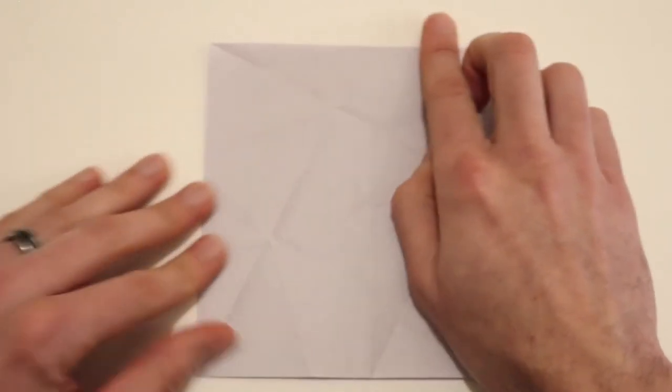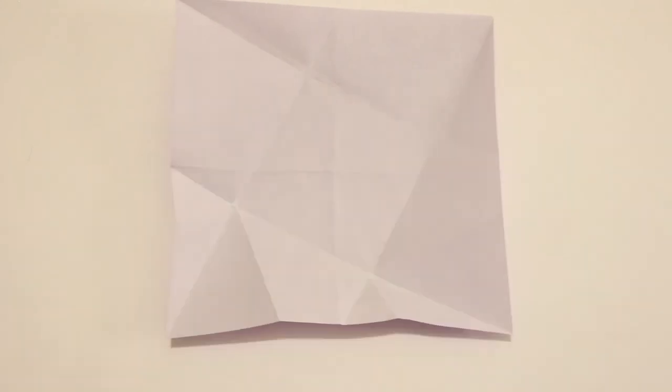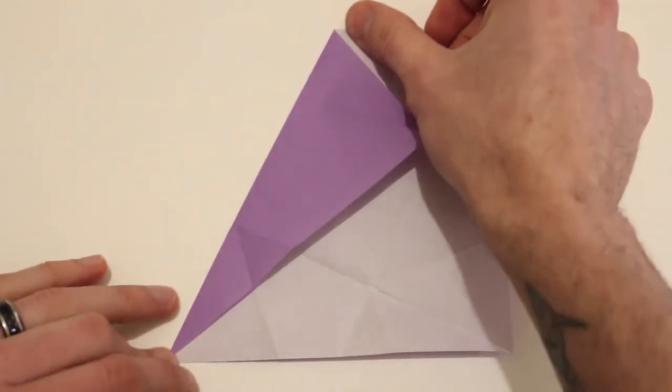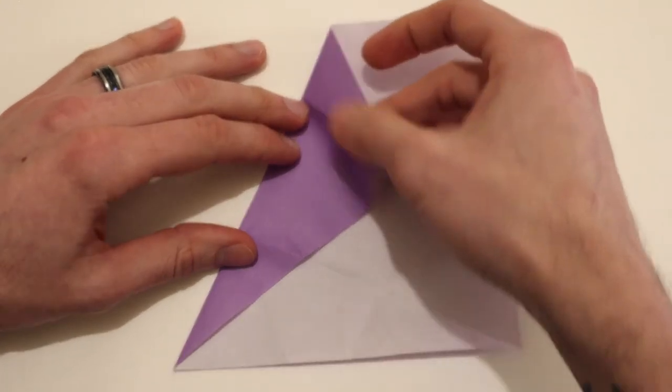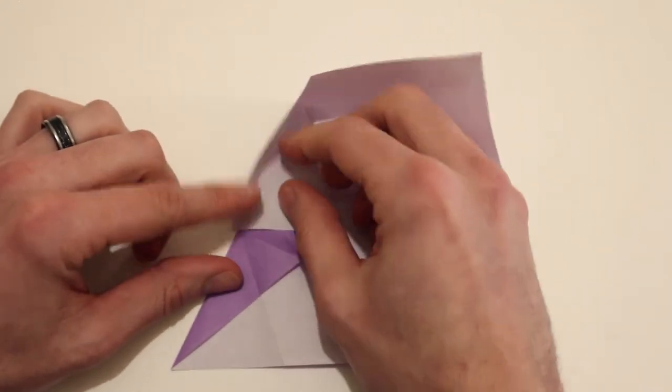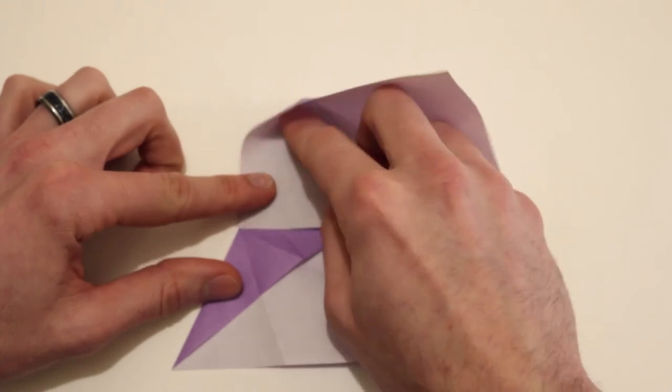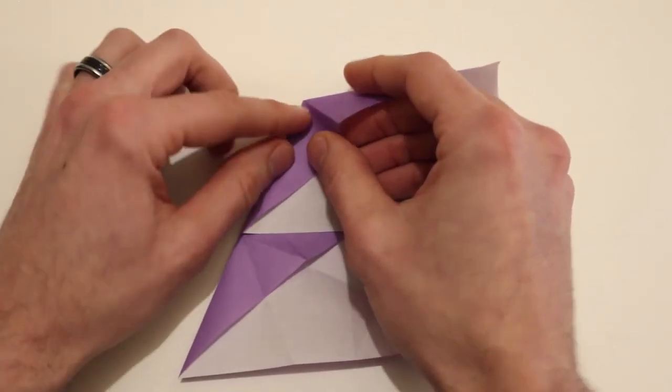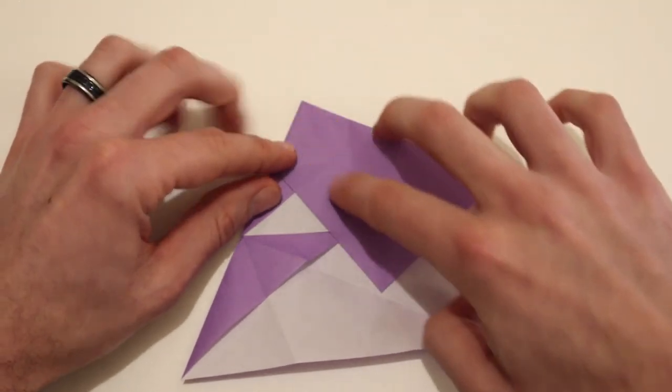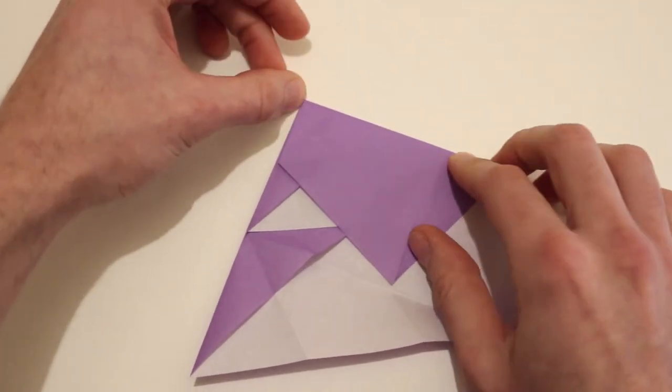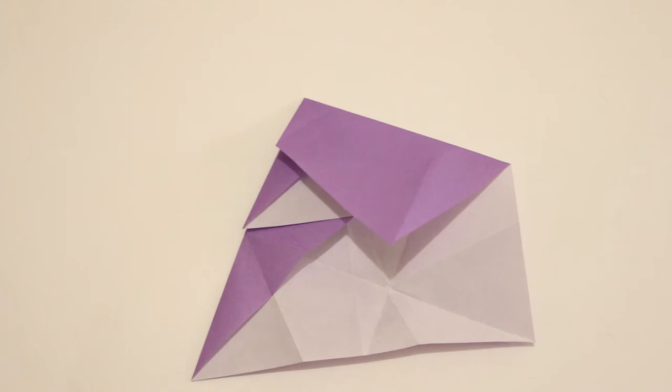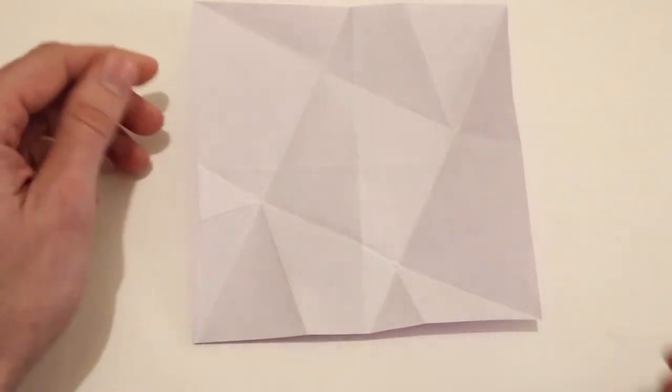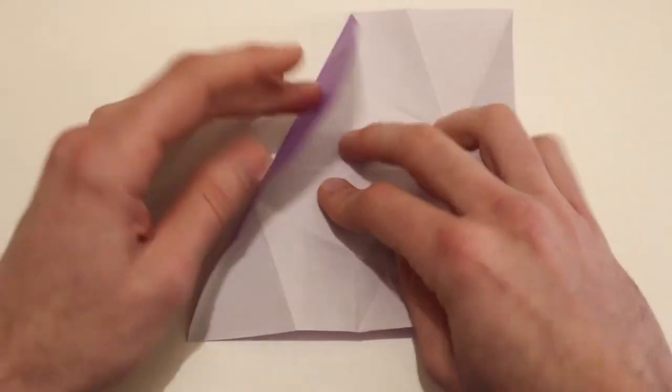Then we'll unfold all of that. Rotate 90 degrees and repeat all of those steps here. And then unfold again. Rotate 90 degrees. Then repeat all of the steps one last time.